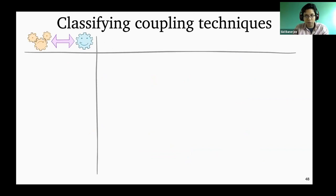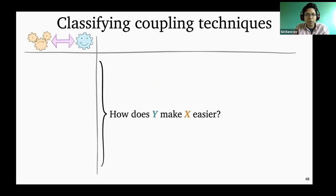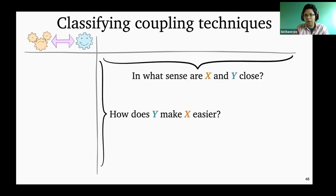What we tried doing in the previous part of the tutorial was come up with some sort of classification for the different coupling techniques commonly used in control problems. The classification has two axes: first explaining how we chose the system y and how it made x easier, and then explaining what techniques we used in order to compare the two systems and show that they were close together.